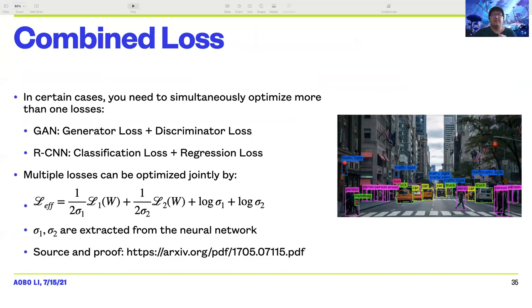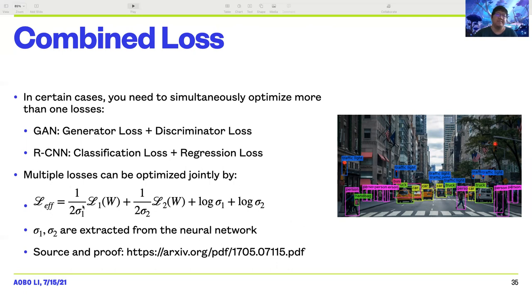In certain cases, you need to simultaneously optimize more than one loss. For example, in a generative adversarial neural network you optimize generator loss and discriminator loss together, and in region-based CNN we optimize classification loss plus regression loss simultaneously. There is a paper that proposes a way to optimize multiple losses simultaneously — the equation uses parameters theta1 and theta2 extracted from the neural network, which change during training. This is useful when designing more complicated machine learning models.